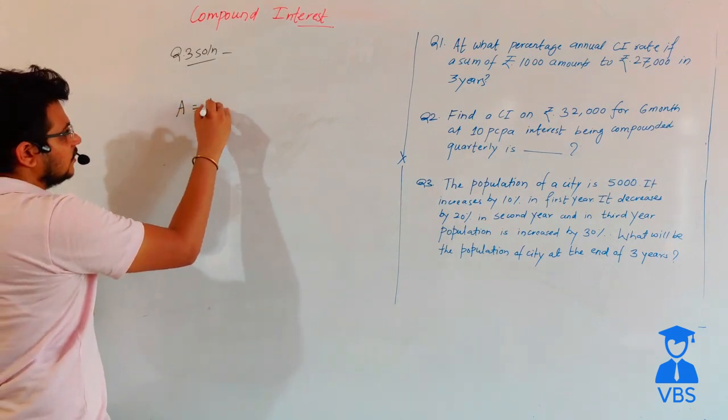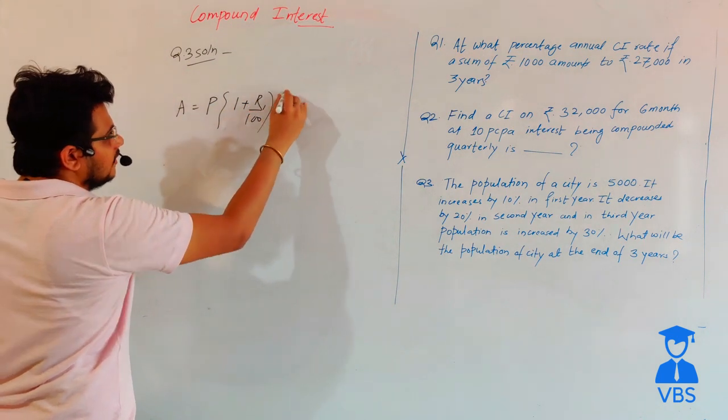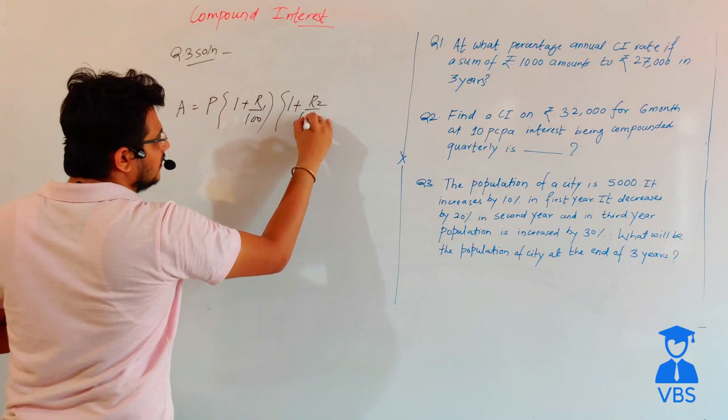Amount equals principal times (1 + R1/100) times (1 + R2/100) and so on for each year.